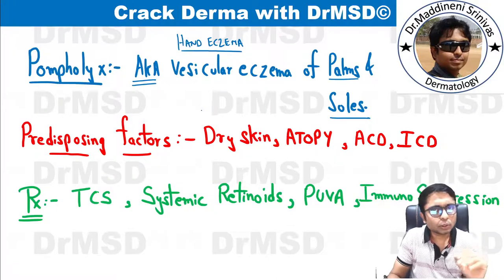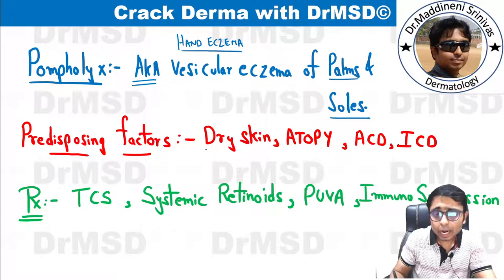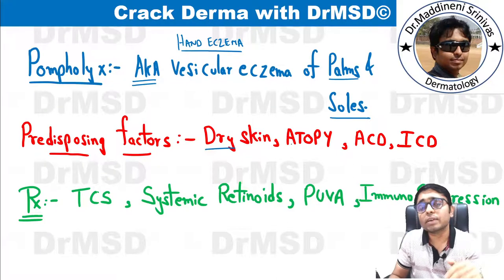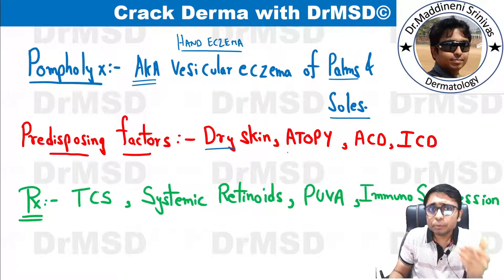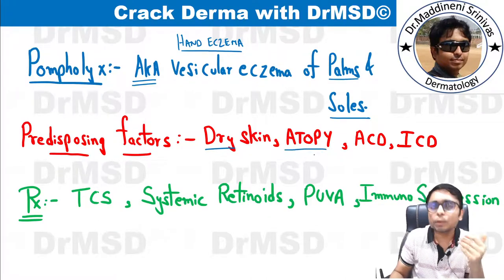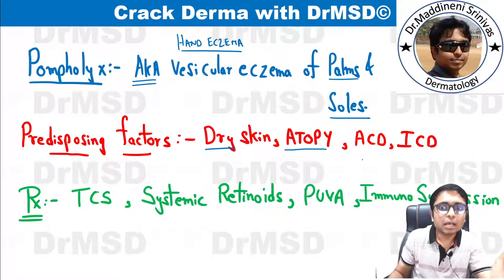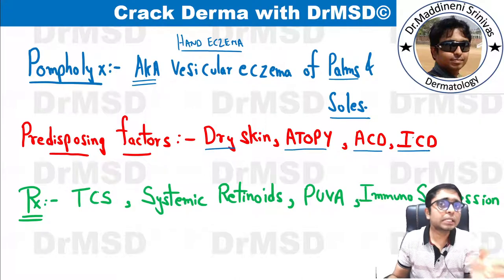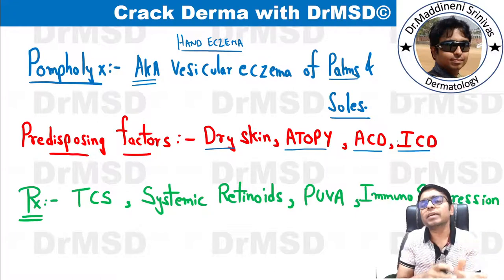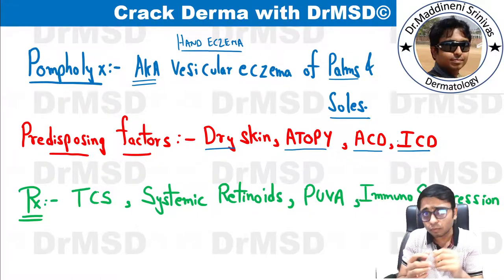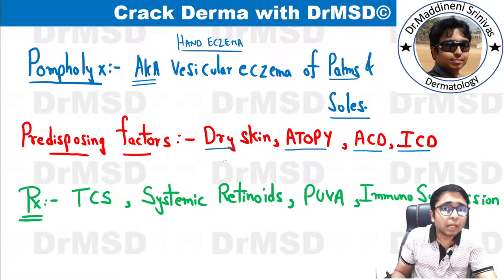What are the predisposing factors for this condition? It was observed that individuals who have dry skin, those with filagrin gene mutations — that is, those who have atopic dermatitis or atopic diathesis — and also those who are exposed to certain allergens and irritants all have a predisposition to develop pompholyx.